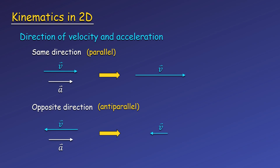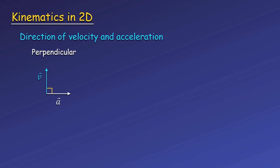If the directions of velocity and acceleration remain opposite, the object would eventually stop and then move in the same direction of acceleration, and then we're back to the previous case. In two dimensions, we have another case: the acceleration can be perpendicular to the velocity. In this case, the object will not speed up or slow down, but it will change directions.